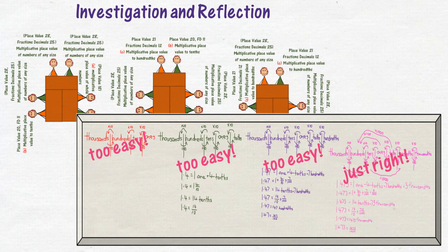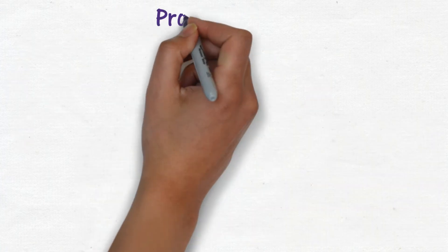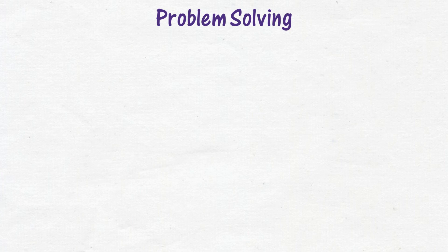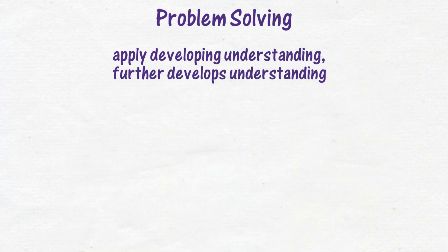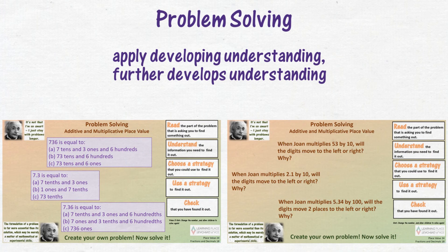What does differentiation using these sample levels of understanding look like in problem solving? Children use their current understanding to investigate solving a problem. Problem solving provides opportunities for children to apply their developing understanding and further develops their understanding. Problems can be easily differentiated to suit the levels of understanding of your students. Children may be directed to the level of the problem to solve by the teacher, or children could look at the levels of the problem and select the level that is at their current level of understanding.